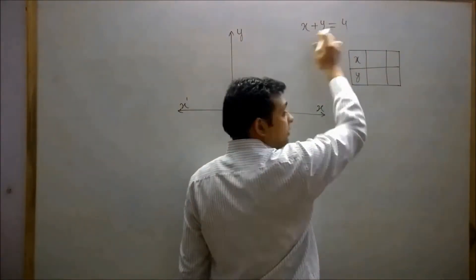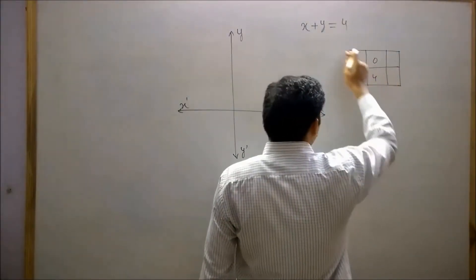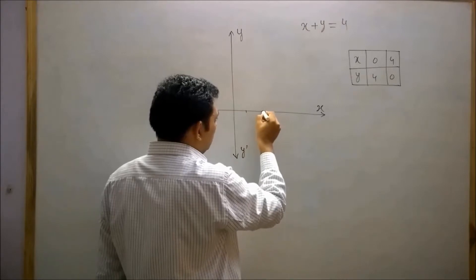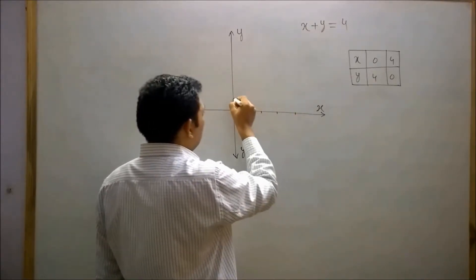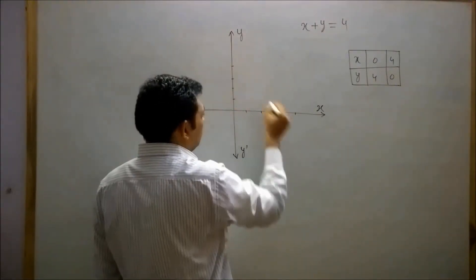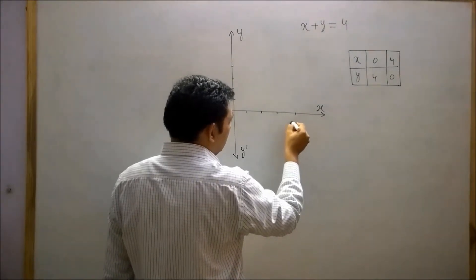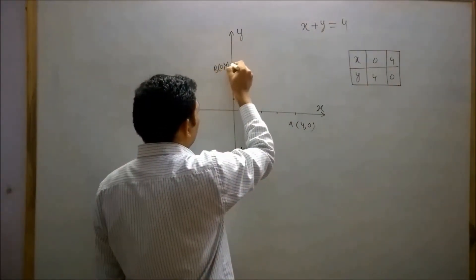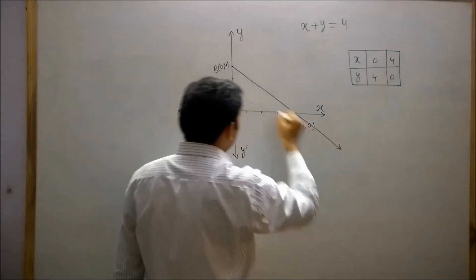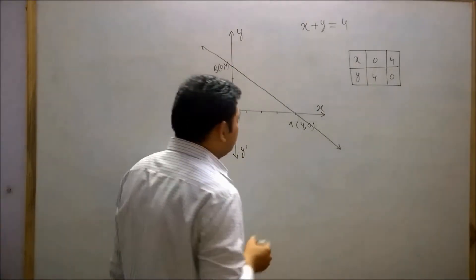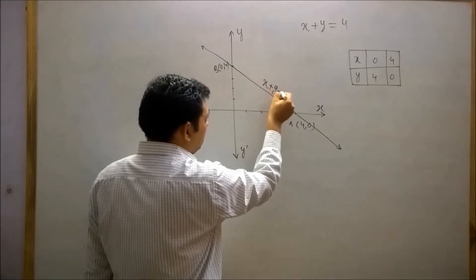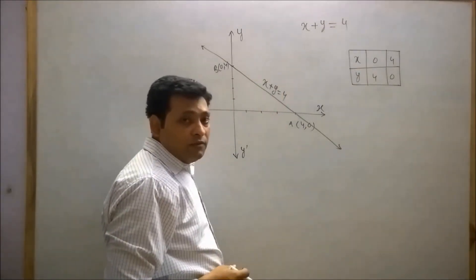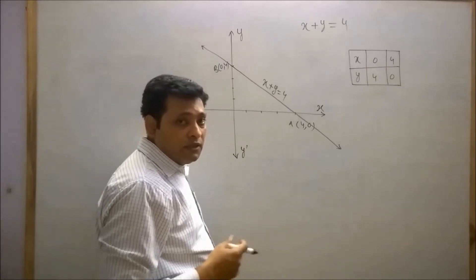If x equals to 0 then y equals to 4, and when y equals to 0 then x equals to 4. Plotting these points: (0, 4) is point A and (4, 0) is another point. Now draw the graph of this equation — x plus y equals to 4. All the points laying on this line are the solution of the given equation, so these points satisfy the equation and make left hand side equal to right hand side.